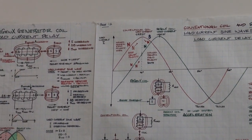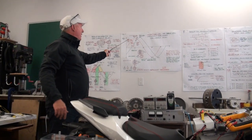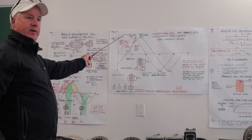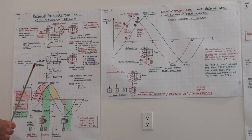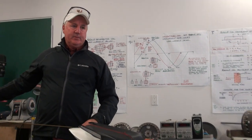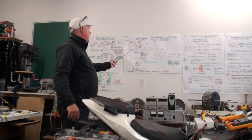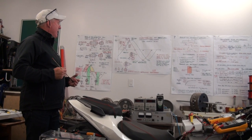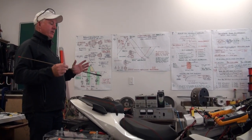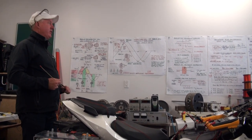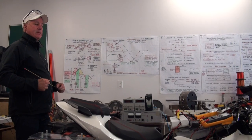The torque produced by the Regen-X coil in this prototype is enough to overcome the torque produced by the conventional coil — it's designed to do that — so we have acceleration. In other prototypes there is only a Regen-X coil, but as an explanation tool, this is what it's all about. That's where the load current delay comes from, how we reverse generator armature reaction, and how the Regen-X coil operates at infinite efficiency.